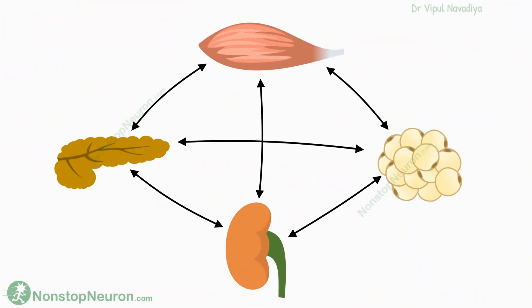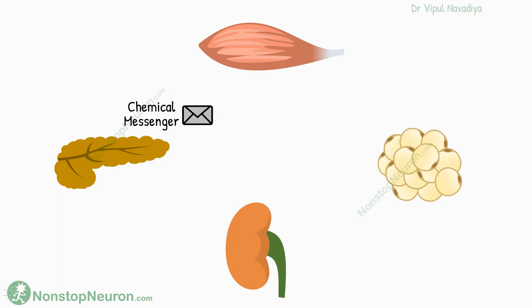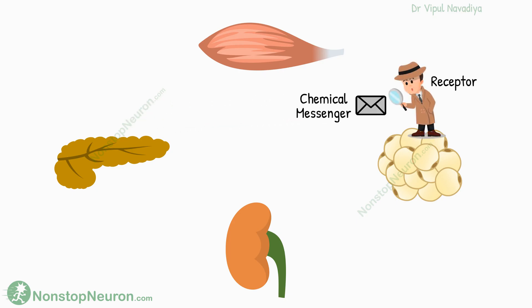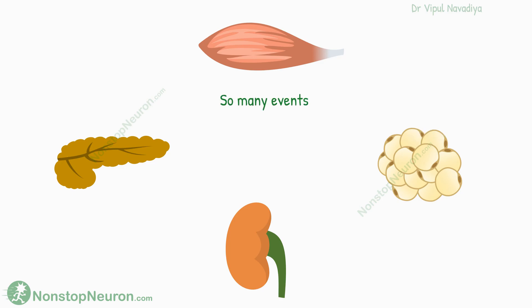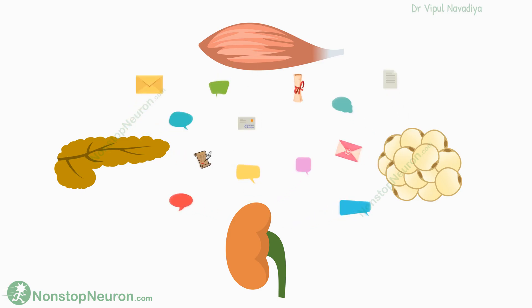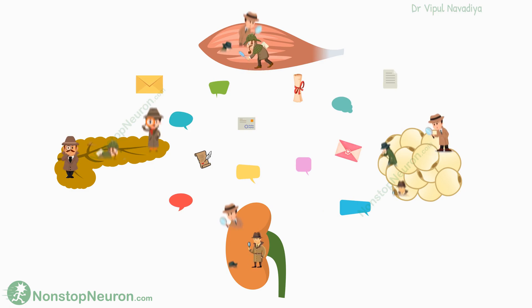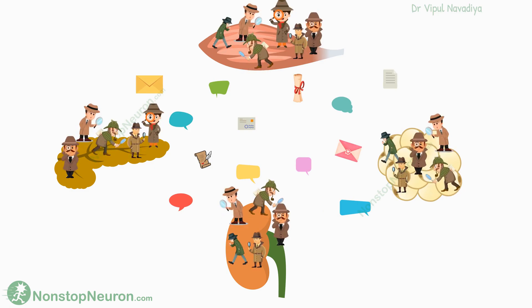First, we need to understand the basic nature of communication between organs in our body. Whenever an organ has to say something, it releases chemical messengers. These messages are identified by organs on the other end with receptors. So many events are going on inside each organ, so they need to communicate so many things. For that, we have a wide variety of messengers, and even more varieties of receptors to identify those messengers.